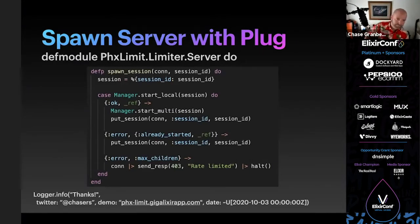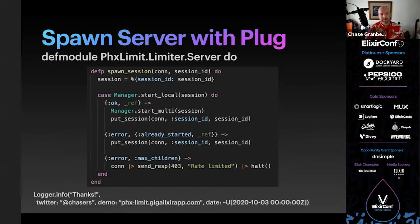When a request comes in, it starts a process. The `spawn_session` function gets the session ID, starts a local process, and if that starts okay it starts the rest of the processes on all the other nodes via `start_multi`. If the local process has already started, we assume some other node already started the whole cluster and ignore it. And if we hit `max_children` — the concurrency limit — we rate limit on that too, so it prevents people from starting too many rate limiter instances.